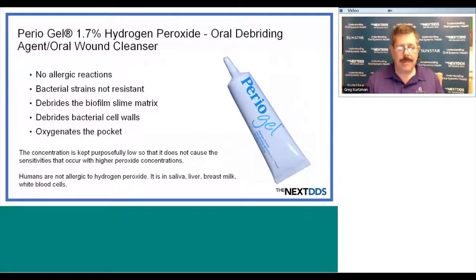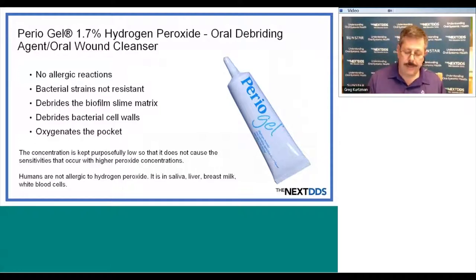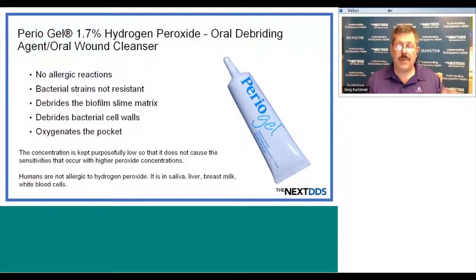Periogel has no allergic reactions, and bacterial strains are not resistant to this 1.7% gel. It debrides the oral biofilm slime matrix, breaks down bacterial cell walls, and oxidates the pocket. The concentration is kept purposely low so that it does not cause sensitivities that occur with higher peroxide solutions. Humans are not allergic to hydrogen peroxide — it's in our saliva, liver, breast milk, and white blood cells. We all produce peroxidases, which break down natural peroxides. Patients who experience irritation from peroxide mouth rinses usually don't produce a lot of peroxidase. We see no irritation at the 1.7% level.